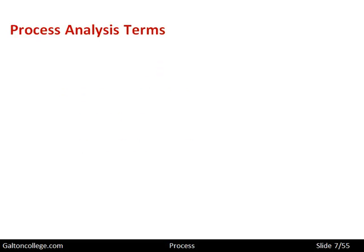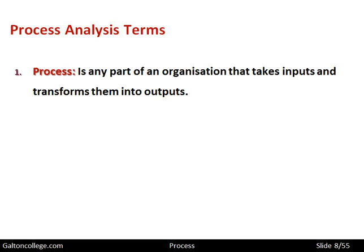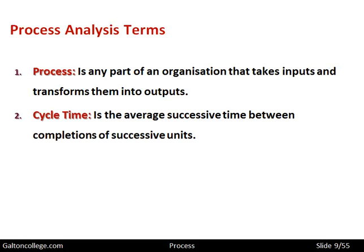Let's look at the process analysis terms. A process is any part of an organization that takes inputs and transforms them into outputs. That's what a process is — it simply converts inputs into outputs. Processes do something; they're converting inputs into outputs. The cycle time is the average successive time between completion of successive units.